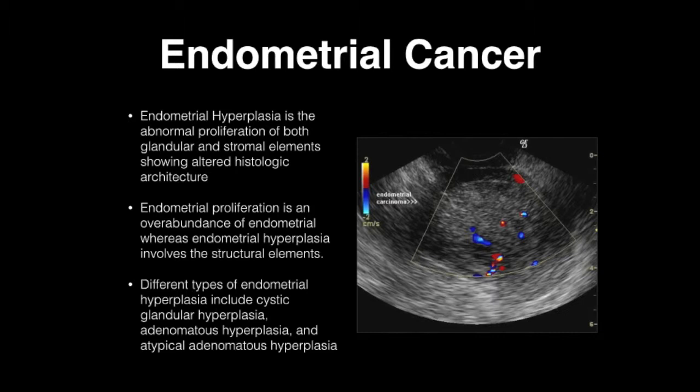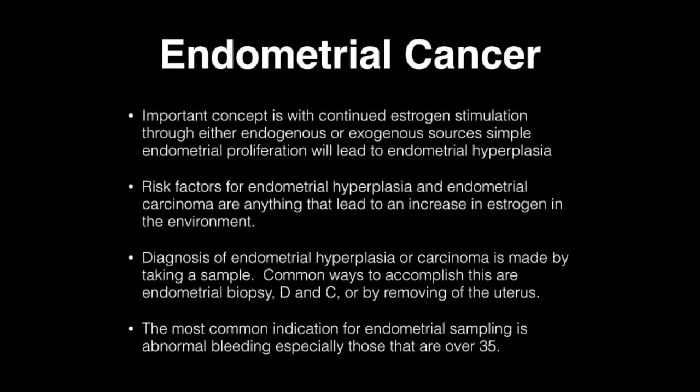Differences in types of endometrial hyperplasia include cystic glandular hyperplasia, adenomatous hyperplasia, and atypical adenomatous hyperplasia. An important concept is that with continued estrogen stimulation, whether from endogenous or exogenous sources, simple endometrial proliferation will lead to endometrial hyperplasia — it essentially feeds the cancer.